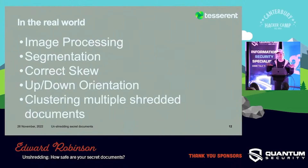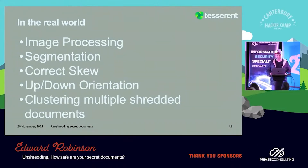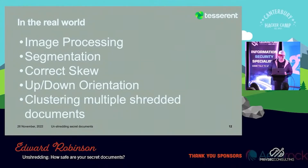Lastly, we need to cluster all the shredded pieces into the documents we believe they might come from. Having a real human correct the results at each step also substantially improves the results. Generally, automatic reconstruction doesn't produce a perfect image first time.